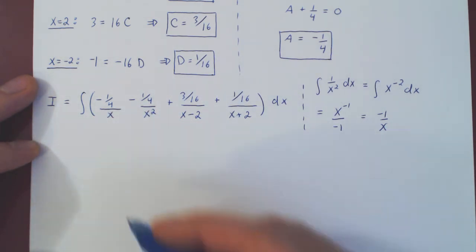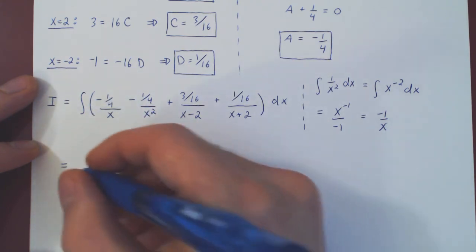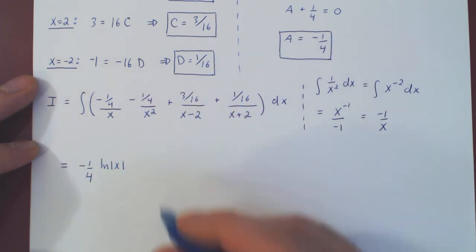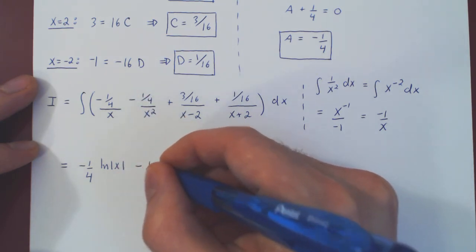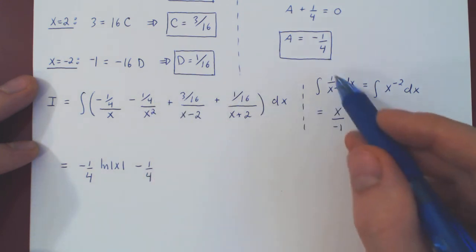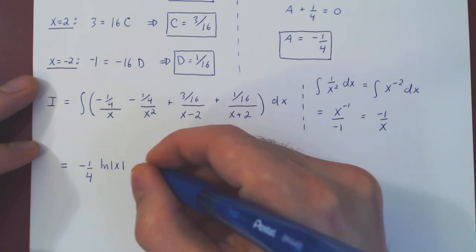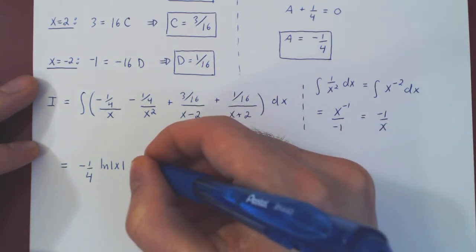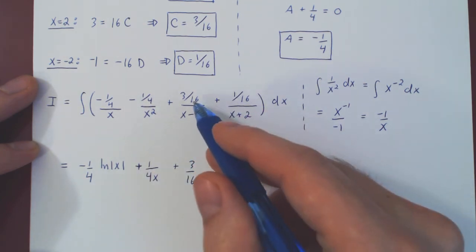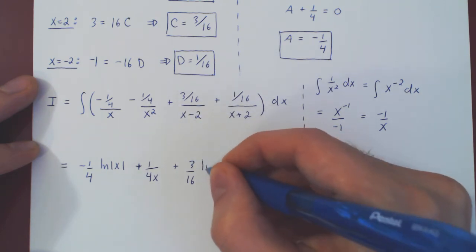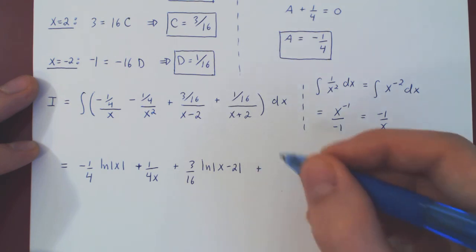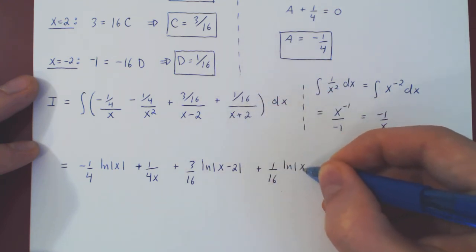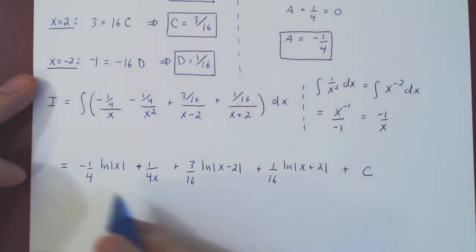The integration is now straightforward. Factoring out negative 1/4, the integral of 1 over x gives ln|x|. Then minus 1/4 times negative 1 over x gives positive 1 over 4x. Plus 3/16 times the integral of 1 over x minus 2, which is ln|x minus 2|. Plus 1/16 times the integral of 1 over x plus 2, which is ln|x plus 2|. Plus the constant C.